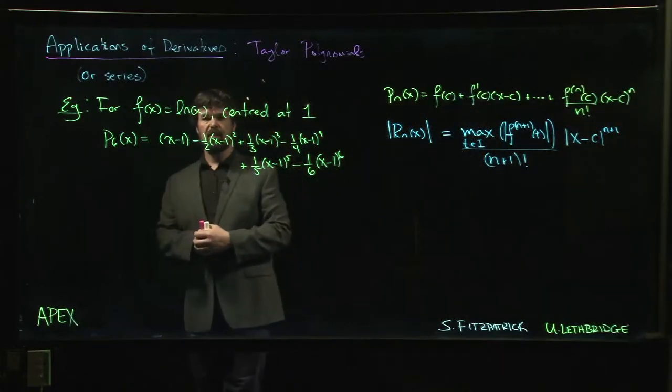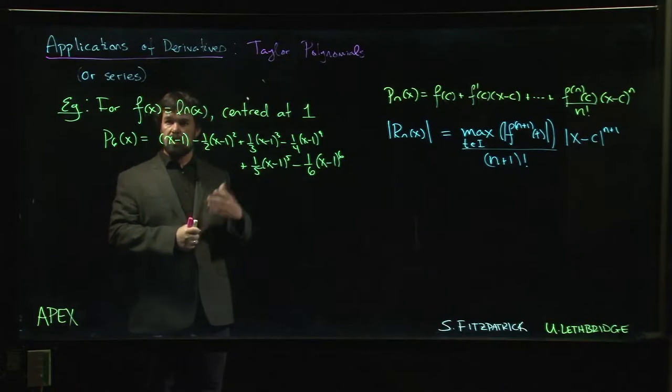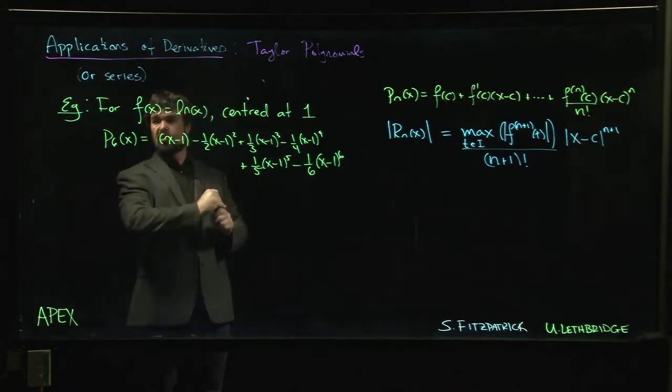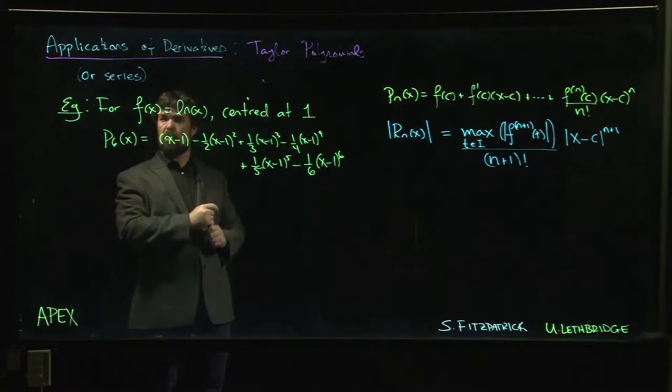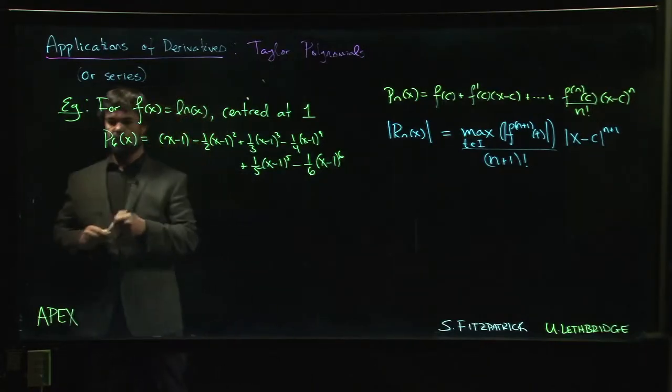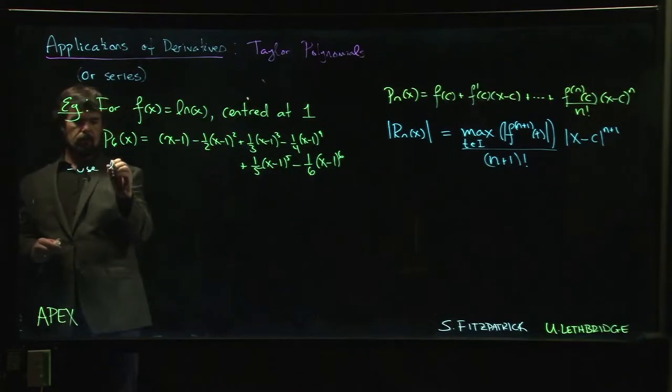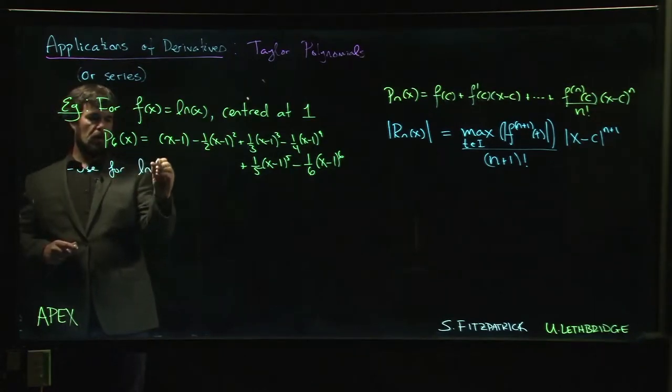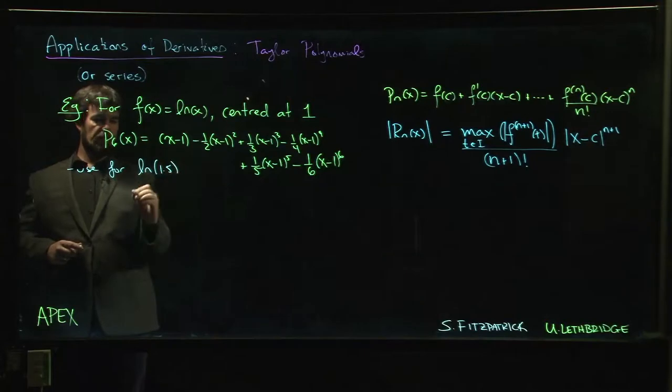Alright, so let's look at an example. We looked at this example earlier with the natural logarithm. We used this degree six Taylor polynomial to approximate values. We did this for the natural log of 1.5.